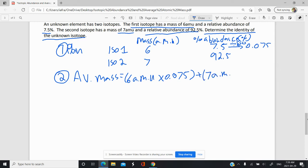Plus the other isotope, 7 AMU, times, don't forget, divide by 100 to get the percentage expressed as a decimal there. And so you get 0.925.